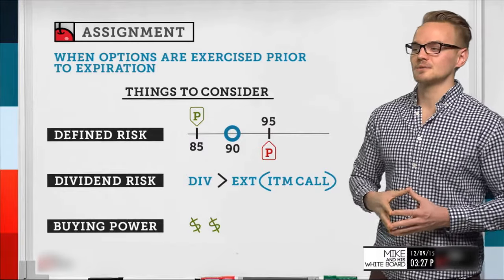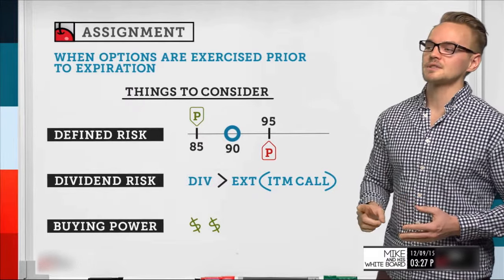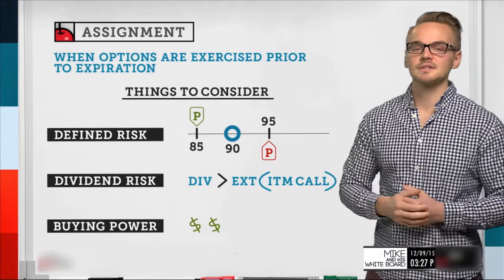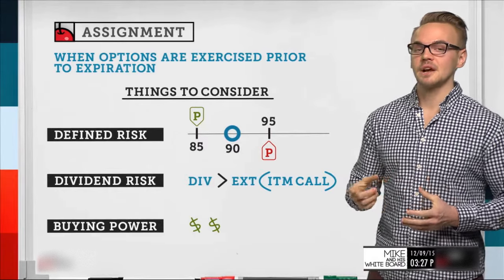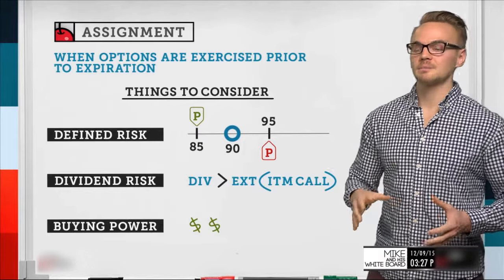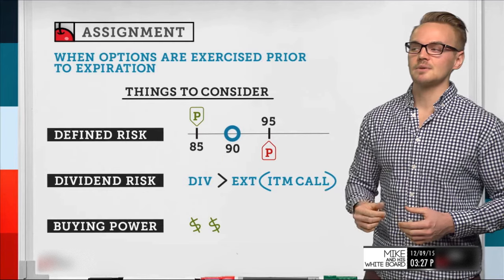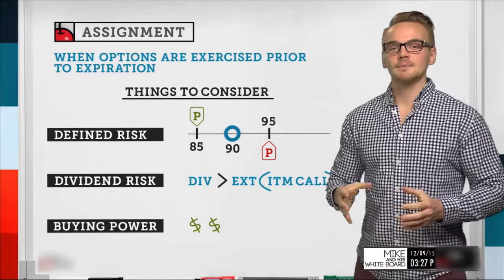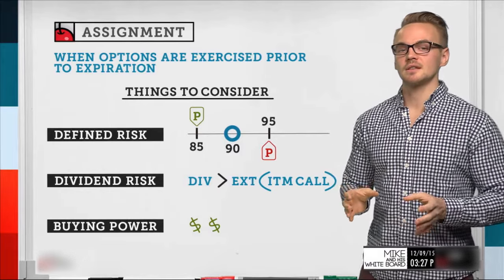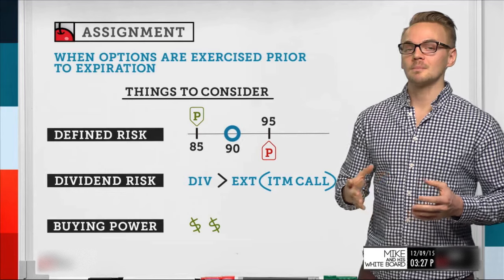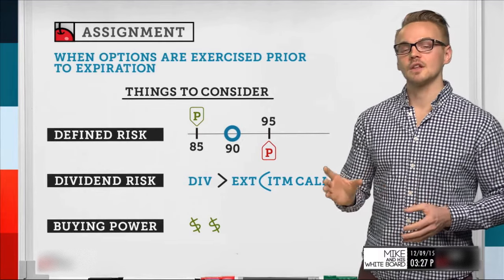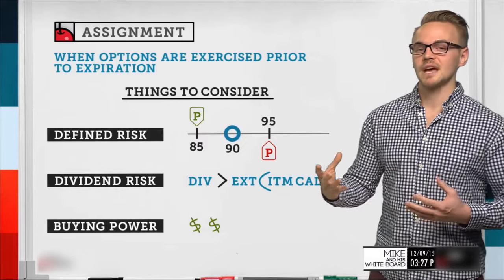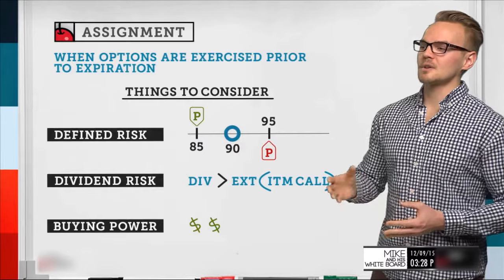Another thing to consider is dividend risk — covered in a separate whiteboard episode. Dividend risk applies to in-the-money short call options. We need to check whether the dividend is greater than the extrinsic value of that in-the-money call and whether the ex-dividend date is approaching. Also keep in mind buying power: while our risk profile may not change when assigned, our buying power reduction will change significantly — which is why we always keep cash in the account.